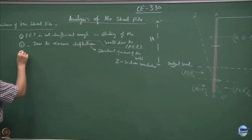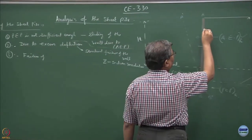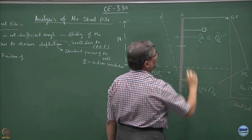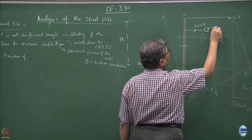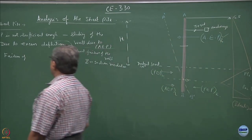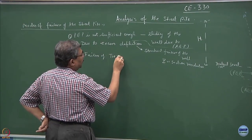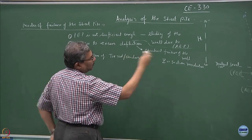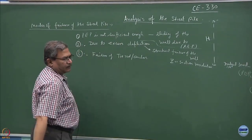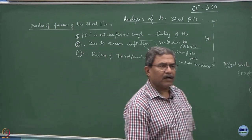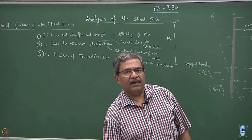The third possibility is failure of the anchor system — the tie rod and anchor edge. There could be slipping of the tie rod or failure of the anchor edge; both systems may fail. These are the three possibilities in which the sheet pile might fail. This is what we analyze to make sure the system is safe against such failures.